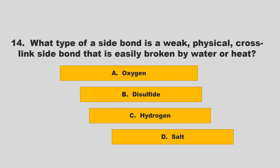What type of side bond is a weak physical cross-link side bond that is easily broken by water or heat? Is it oxygen, disulfide, hydrogen, or salt? If you chose C, hydrogen, you are correct.